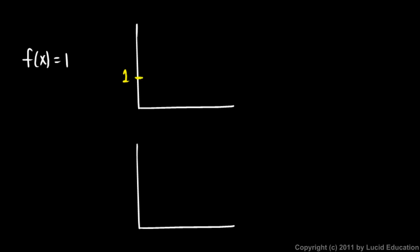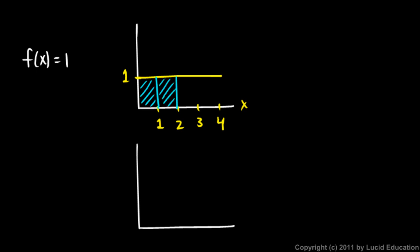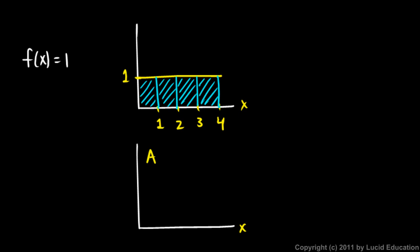That's a height of 1, just flat. Let's put some x values down here: 1, 2, 3, 4, and so on. Now what we want to do is imagine a line sliding to the right, and as it moves to the right, it sweeps out some area behind it. At different x values, it's obviously swept out a different amount of area.